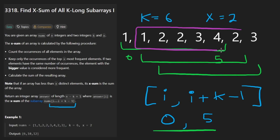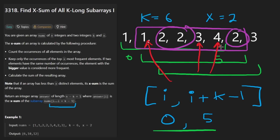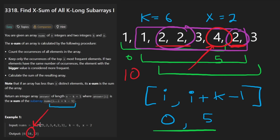Looking at the second subarray, what are the most frequent elements? There are three occurrences of two, so definitely that one. We still need two most frequent elements, and it looks like there's a tie — we have a one, a three, and a four. When there's a tie, they tell us to choose the one with the biggest value. So we pick the four. For this second subarray, we get three occurrences of two plus four, giving us a total sum of 10 — that's why you see 10 there.